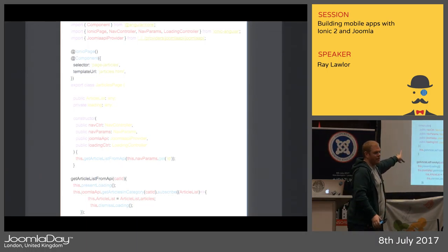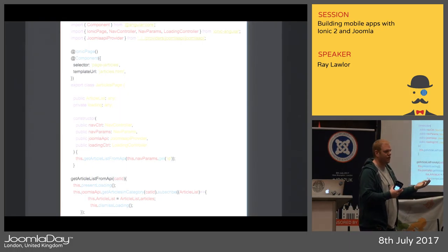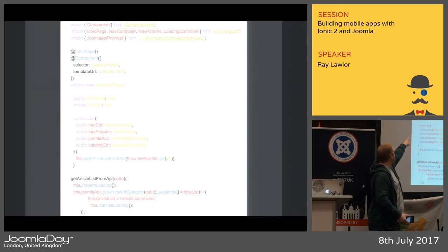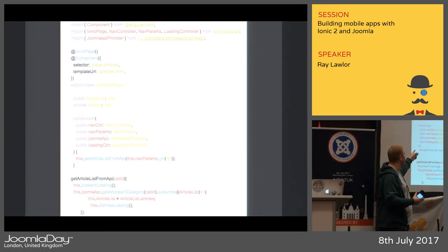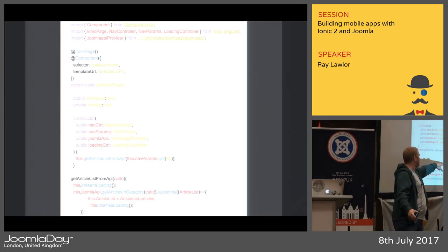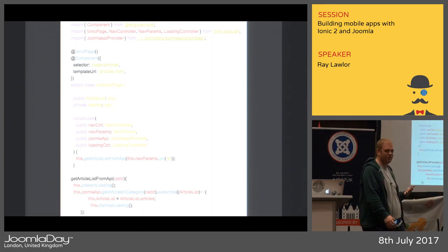This is where it gets easier for PHP developers — we export a class. When you see the word 'class', think PHP class. We declare public and private variables, then we have a constructor. PHP developers will know: you run a constructor when the class gets called. We set up parameters in the constructor and call a function on construction too. Functions look just like PHP functions: function name, parameters, and all your logic between curly brackets.